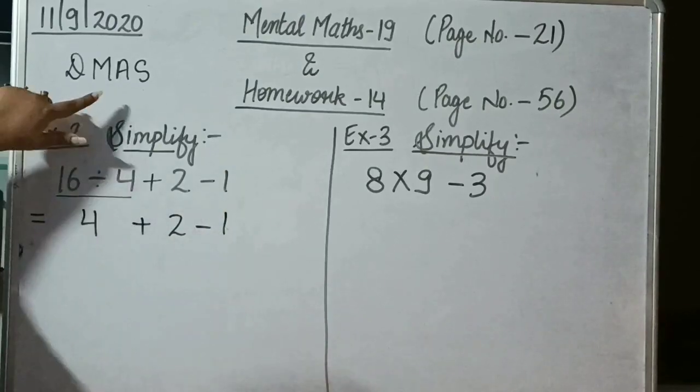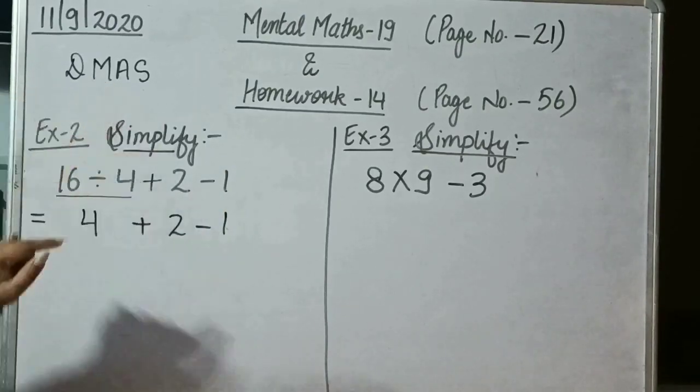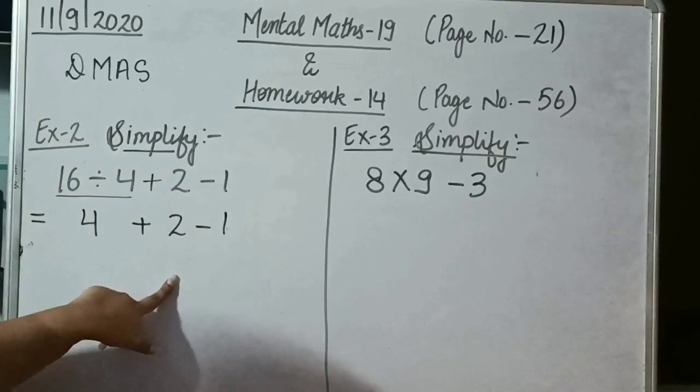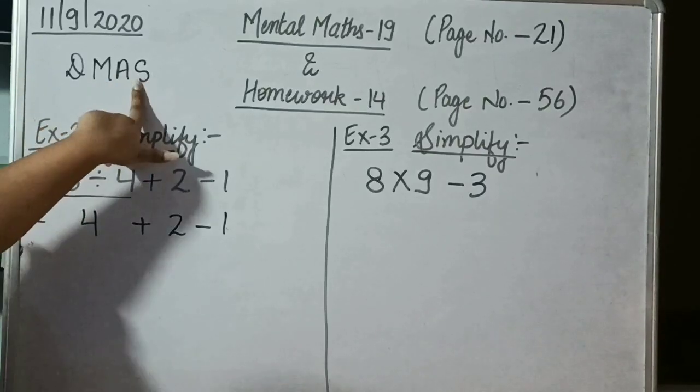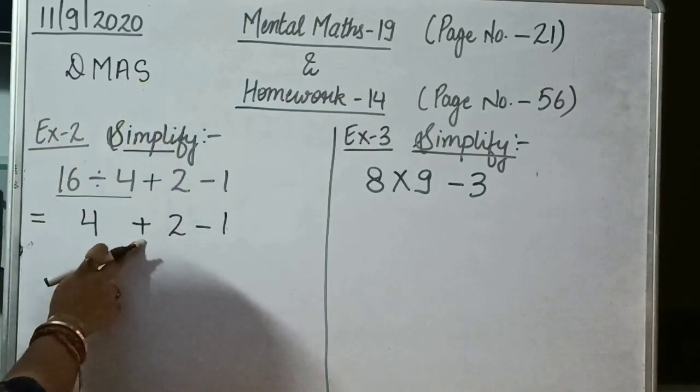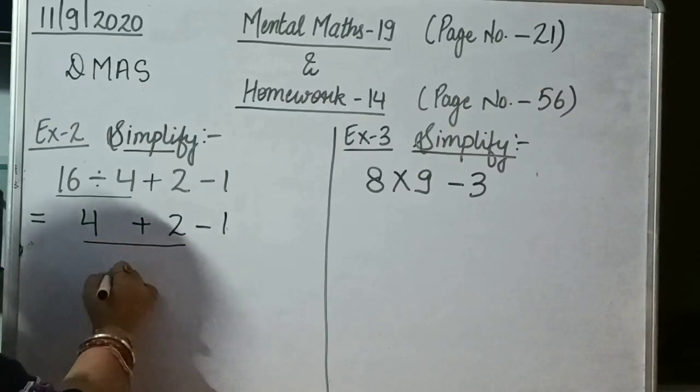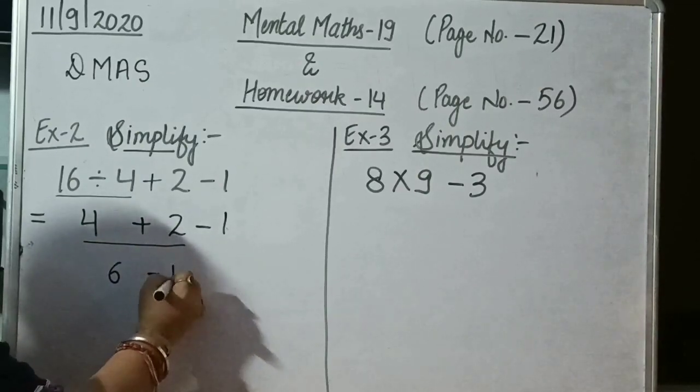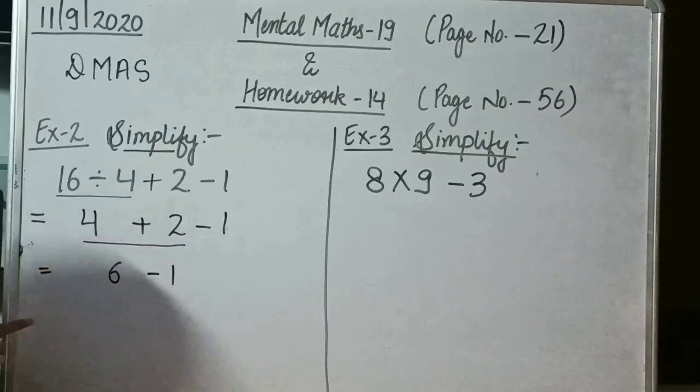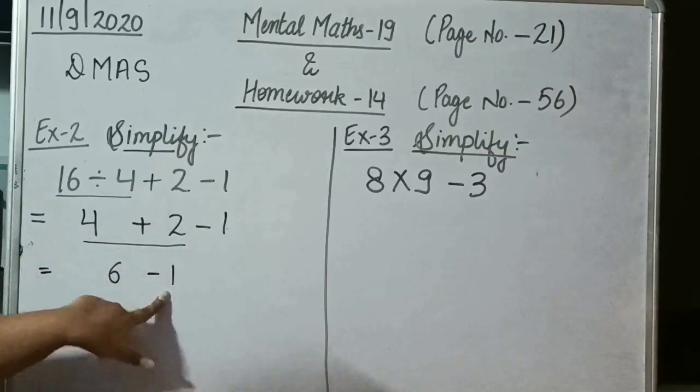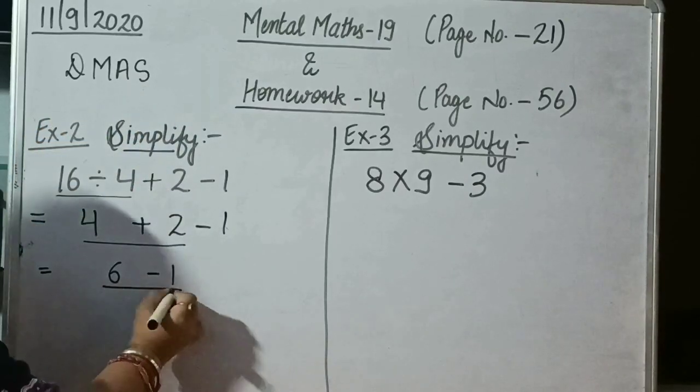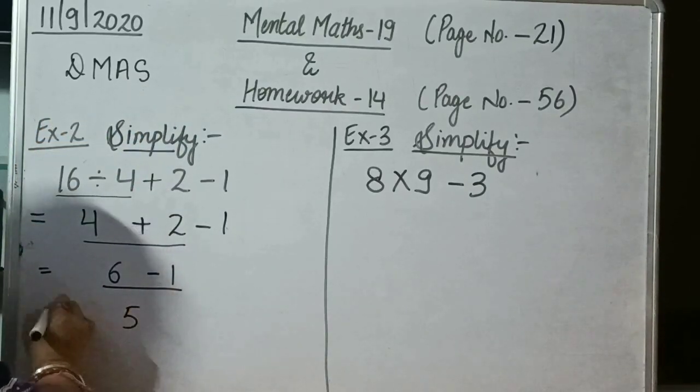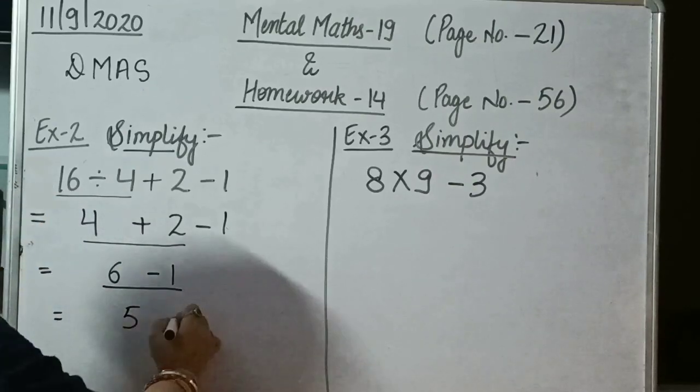Now the next operation is multiply, but we can observe that in this example, we are not having multiplication. So we will skip the multiplication and move to addition. Now we can see that there is addition. So we will add 4 plus 2, that is 6, then minus 1. Now the last operation is subtraction, so you will subtract. 6 minus 1 will be 5, so the answer for this question is 5.